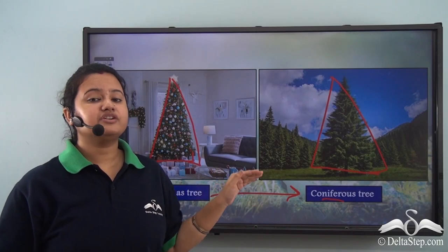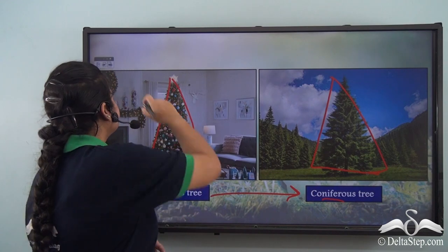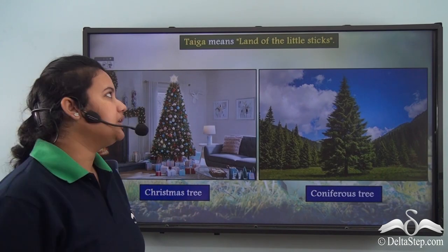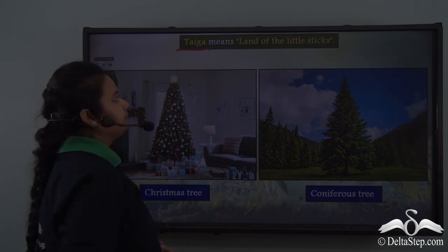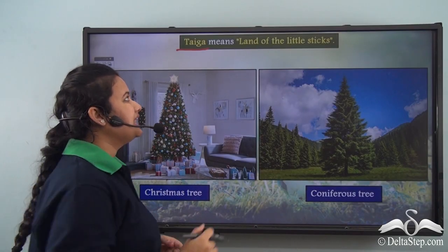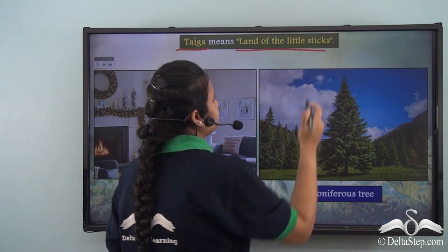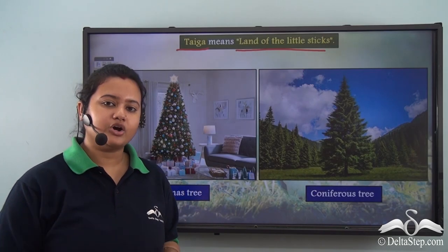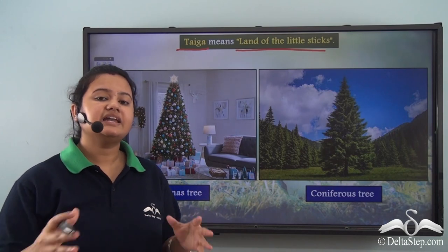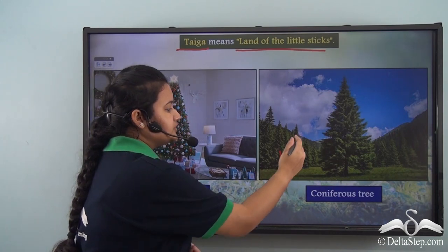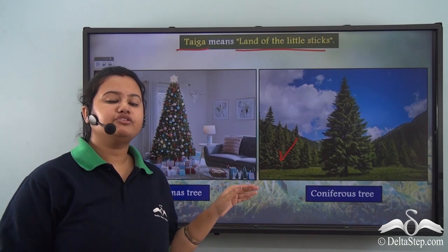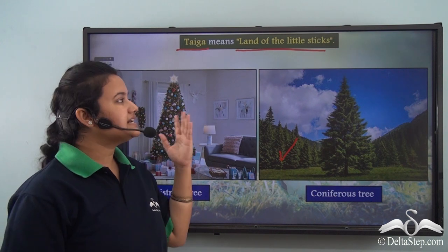Now can you tell me where coniferous trees are found? Coniferous trees are found in the Taiga biome. The word 'Taiga' means 'land of little sticks' in Russian, because the region is entirely covered with coniferous trees which look like little sticks. Hence, the region densely covered with coniferous trees is known as the Taiga region.